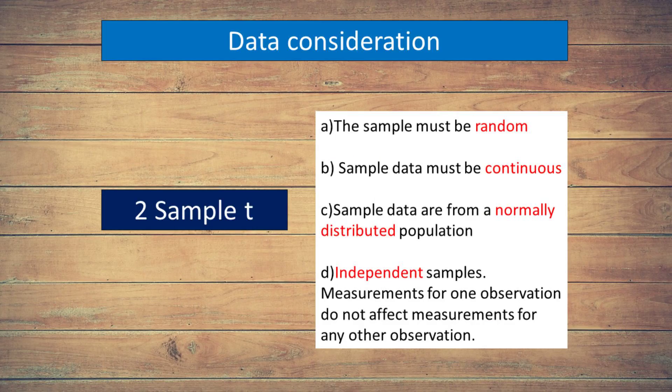To ensure that your results are valid, consider the following guidelines when you collect data, perform the analysis, and interpret your results. The sample data should be selected randomly. If your data are not collected randomly, your results may not represent the population. Sample data must be continuous. Continuous data has an infinite number of values between any two values. Sample data should be from a normally distributed population, and measurements for one observation should not affect measurements for any other observation.